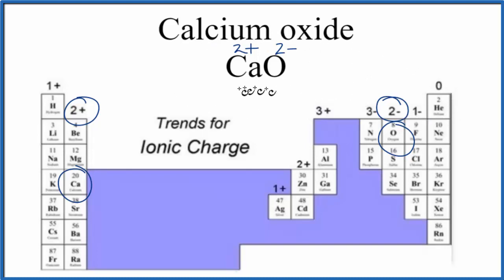This is Dr. B answering whether calcium oxide (CaO) is ionic or covalent. It is ionic. Thanks for watching.